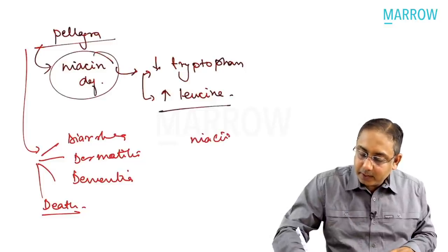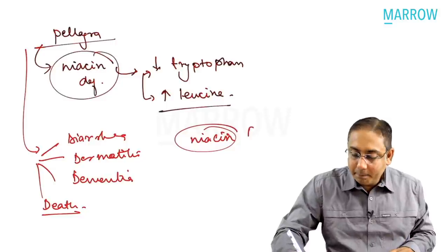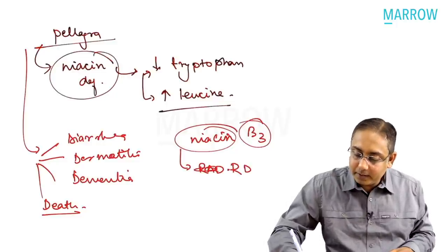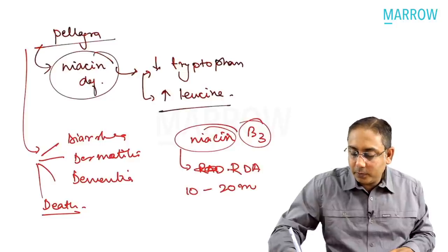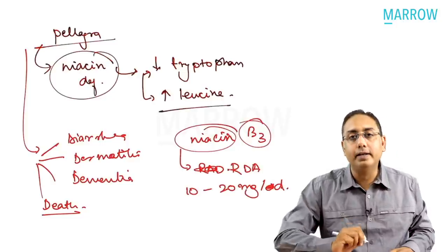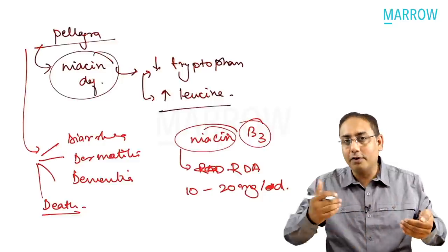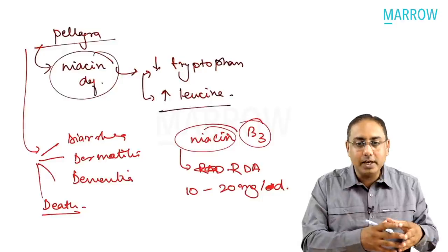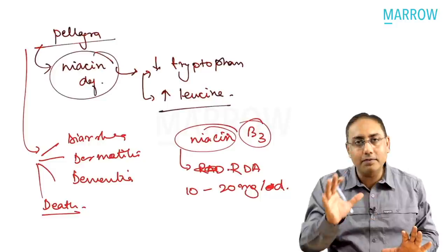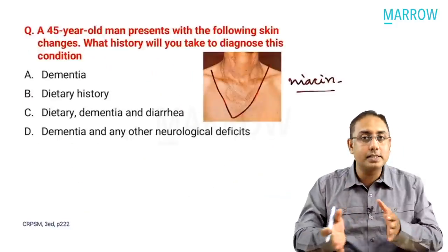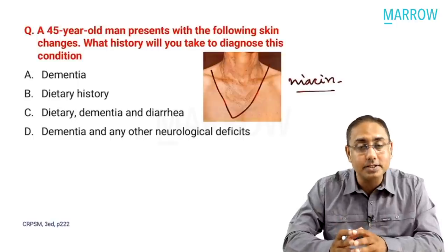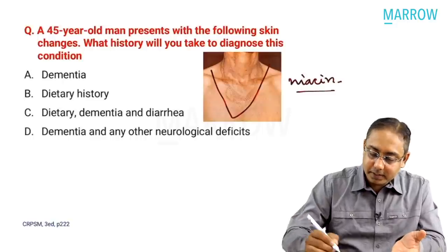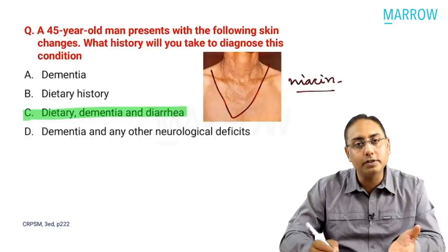Niacin is vitamin B3. The recommended dietary allowance for niacin ranges from 10 to 20 milligrams per day, depending on whether the person is a male/female, light/moderate/heavy worker, or child. In niacin deficiency, predominantly maize eaters may develop pellagra. Classical features: diarrhea, dermatitis, dementia, and death - the three or four D's of pellagra. This was a fairly straightforward MCQ.